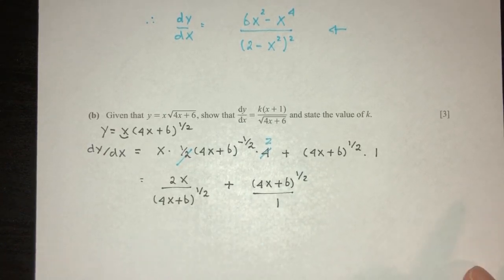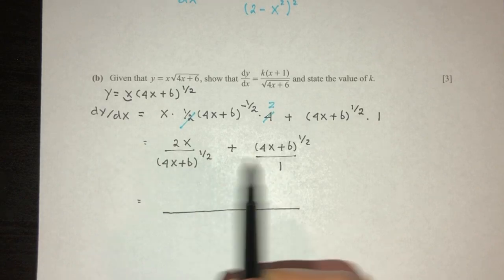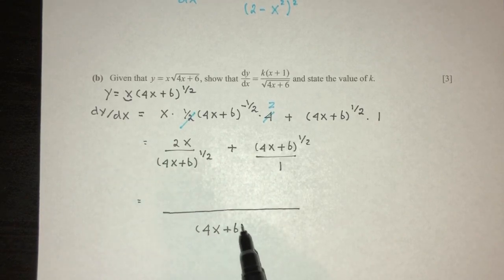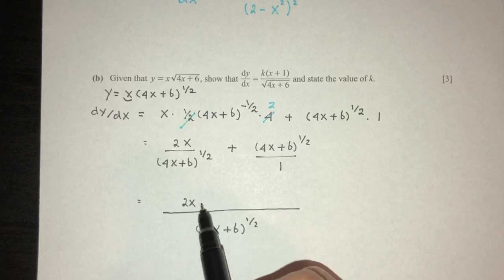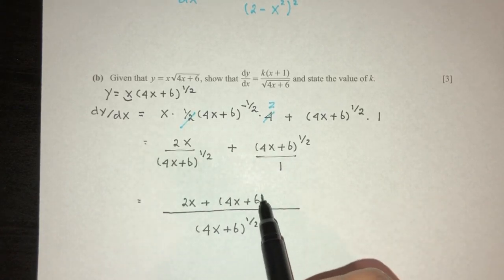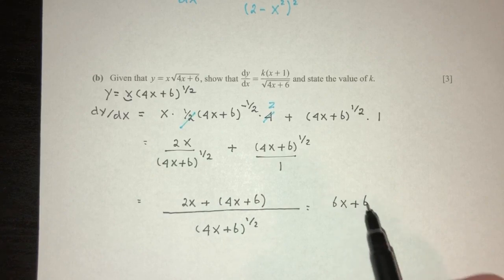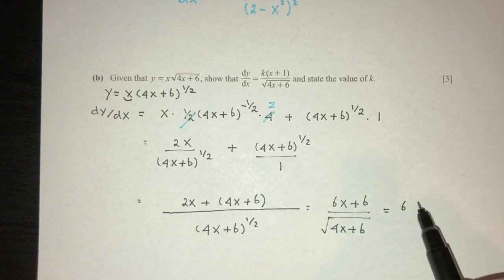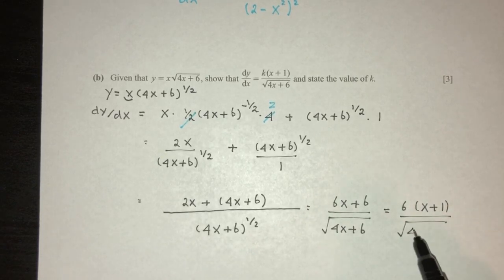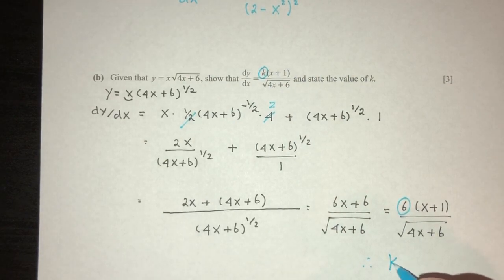Combining the two fractions by finding LCM: the numerator becomes 2x + (4x + 6), which is 6x + 6, all over (4x + 6)^(1/2). Factorizing: 6(x + 1) over root(4x + 6). Comparing with the given form, k has to be 6. That is your answer for question number three.